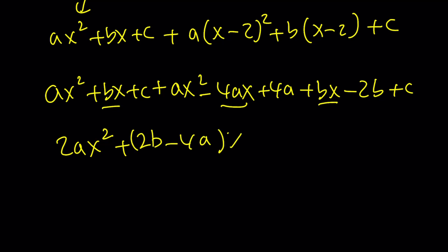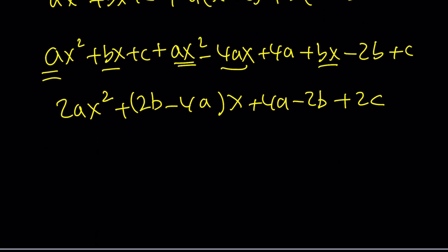Looks like it, right? And then my constants are going to be 4a - 2b + 2c. That came up a lot, so I'm kind of restraining myself. This is supposed to equal 6x + 4. What's that supposed to mean? This is equal to 6x + 4.